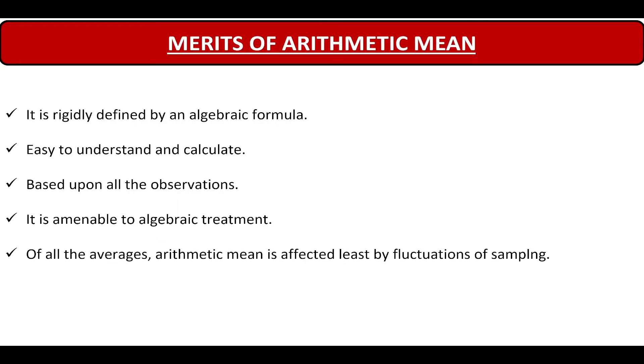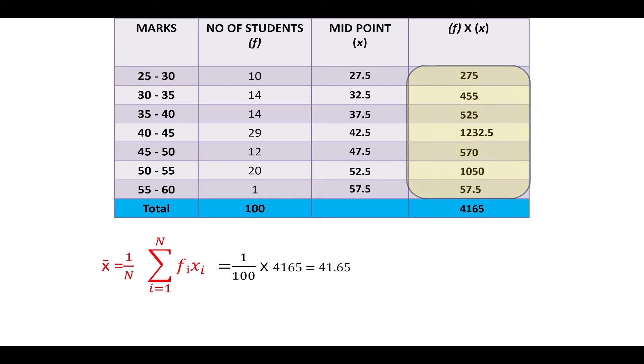Thirdly, it is based upon all the observations. We take all the observations in our calculation to calculate the arithmetic mean. We do not skip any observation. Thus, the mean that we get is a true representation of all the observations.